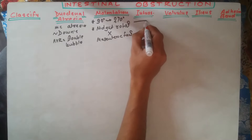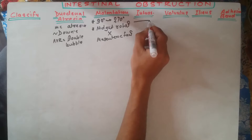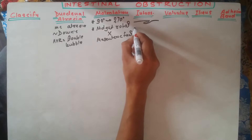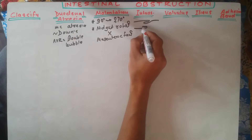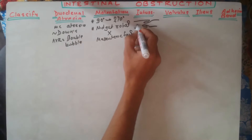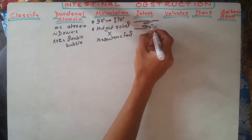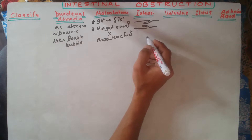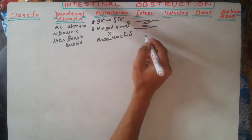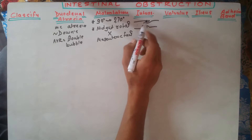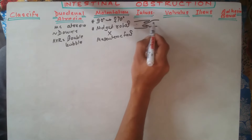To remember intussusception: imagine the lumen of the gut goes inside and then comes back out. The proximal part is on one side and the distal part on the other. Intussusception is usually seen at the ileocolic junction, but can also be colonocolic — involving the colon with the colon, or ileum with colon.